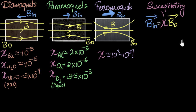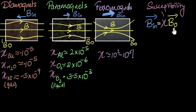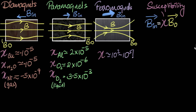A quick disclaimer: if you look in textbooks or online resources, susceptibility is formally defined in terms of a vector called magnetization and magnetic intensity — not in terms of regular magnetic fields. But to understand the meaning of susceptibility, we don't need those terms yet, which is why I introduced it in terms of normal magnetic fields. Maybe in future videos we'll introduce those new terms as well.